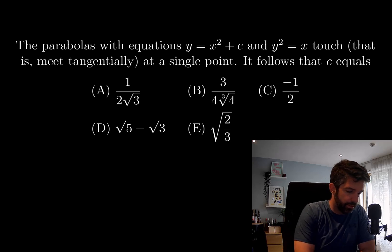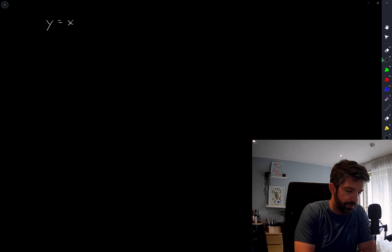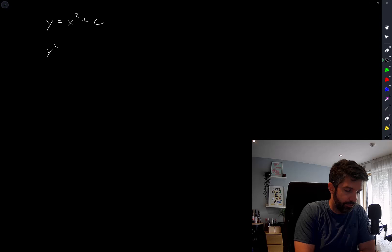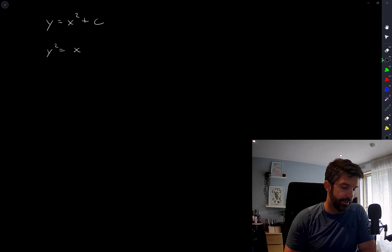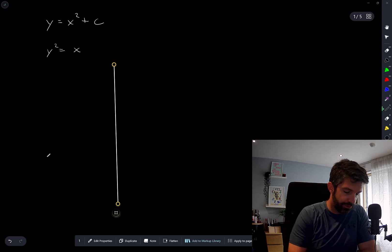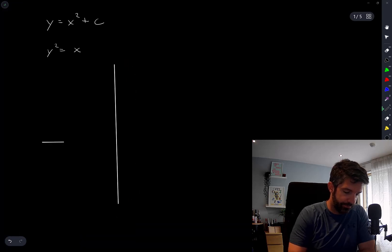Let's write out what the two parabolas are. So I have y is equal to x squared plus c. This opens upwards and has a shifted vertically by c. And we also have the parabola y squared is equal to x. So this is one that opens to the right. And you can see if I roughly sketch these two things, y squared is equal to x is that and y is equal to x squared plus c.